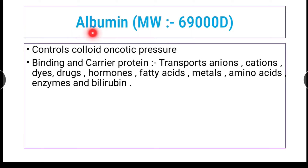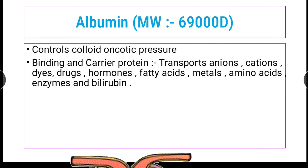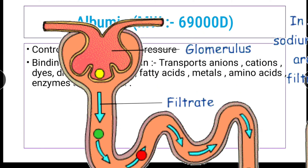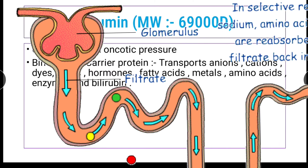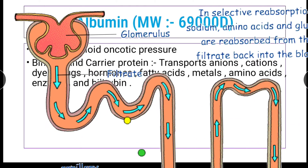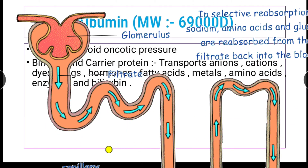Looking at the individual plasma proteins: firstly, albumin has a molecular weight of 69,000 daltons. Knowing the molecular weight is important because if there is a problem with glomerular filtration, low molecular weight proteins appear first in urine — so albumin appears first.